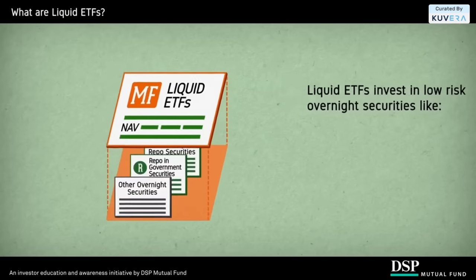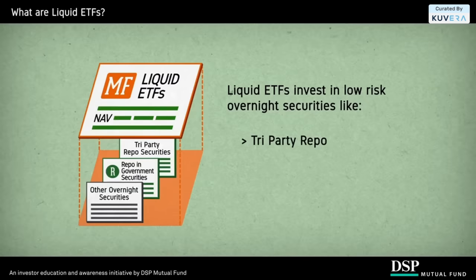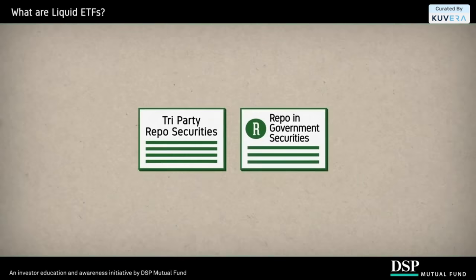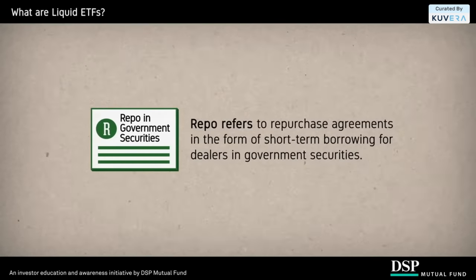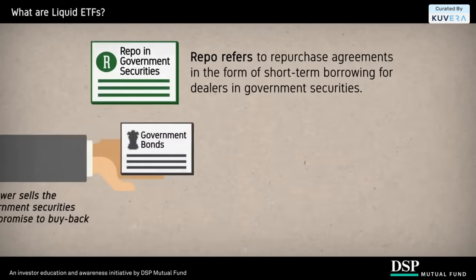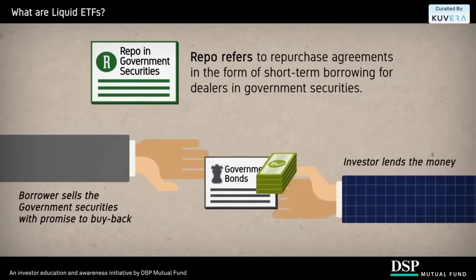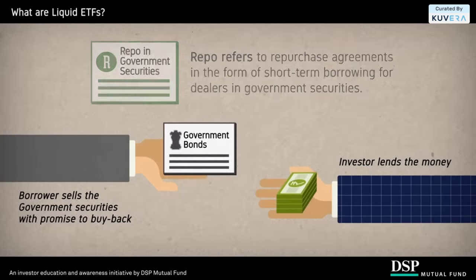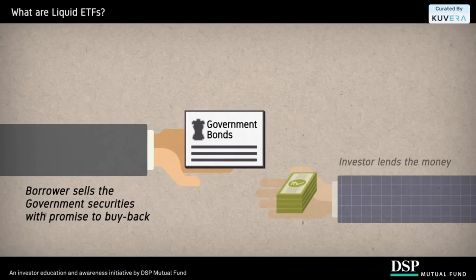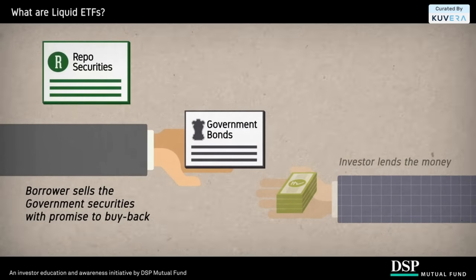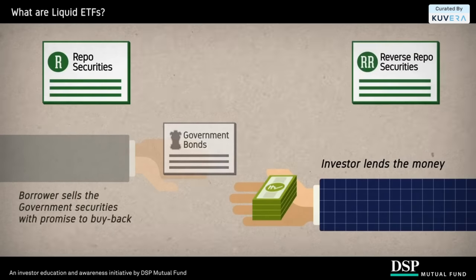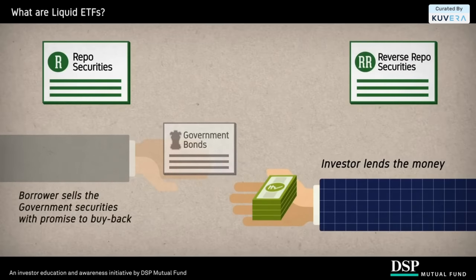Liquid ETFs invest in low-risk overnight securities like tri-party repo, repo, and government securities. Repo refers to repurchase agreements in the form of short-term borrowings for dealers in government securities. The borrower sells the government securities to investors, usually on an overnight basis, and buys them back the following day. For the borrower selling the security and agreeing to repurchase it in the future, it is a repo. For the investor buying the security and agreeing to sell it in the future, it is a reverse repurchase agreement, or reverse repo.